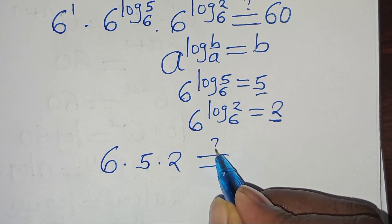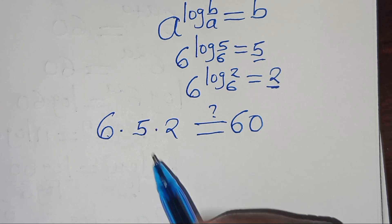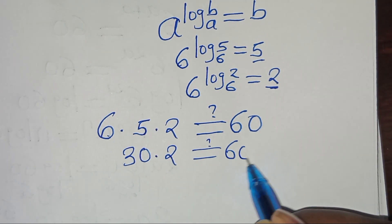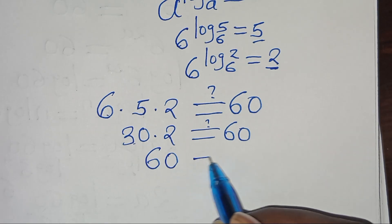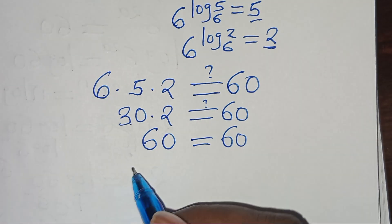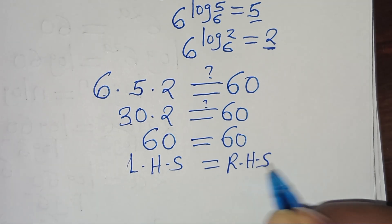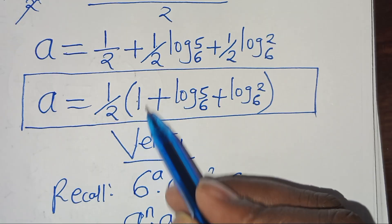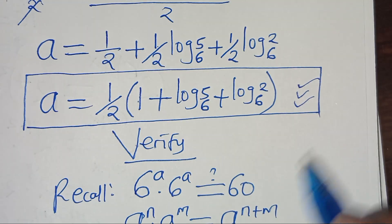So, substituting 5 and 2, we have 6 multiplied by 5 multiplied by 2, which is supposed to give us 60. This means 6 times 5 is 30, multiplied by 2, which gives 60. This is equal to 60, which implies that the left-hand side equals the right-hand side, and confirms that the value of a — which is one half times (1 plus log₆5 plus log₆2) — actually satisfies the equation.